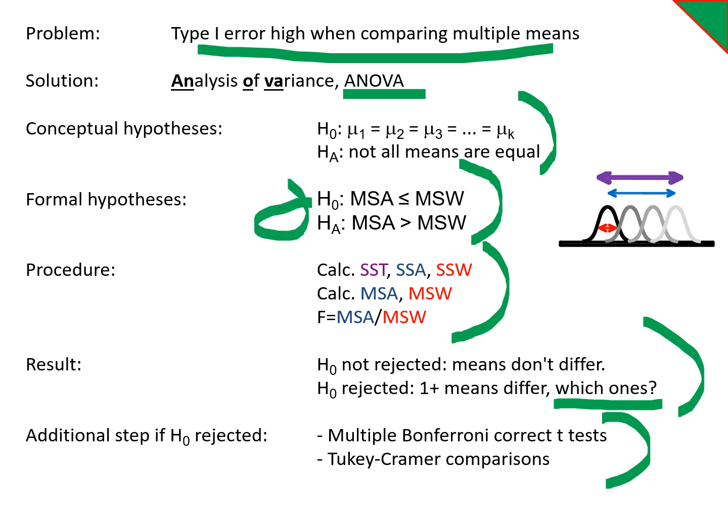And then in here, at the very beginning, actually, I guess here for our procedure, this is where we do our Fmax test to make sure that the variances are all equal because the ANOVA is a homoscedastic technique.